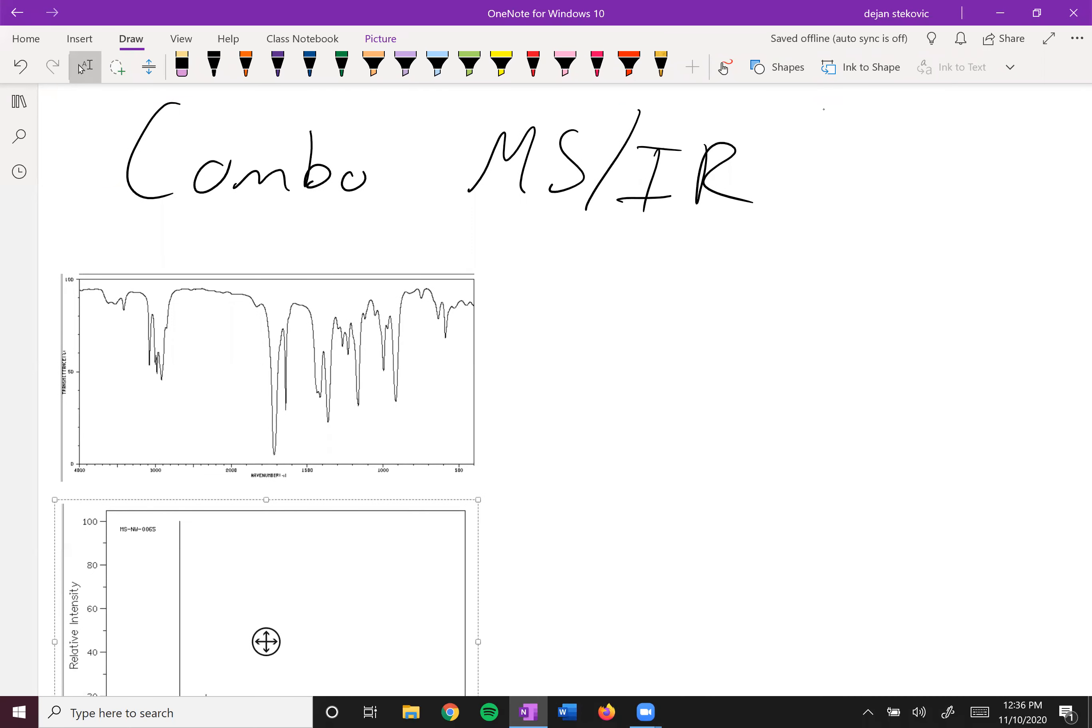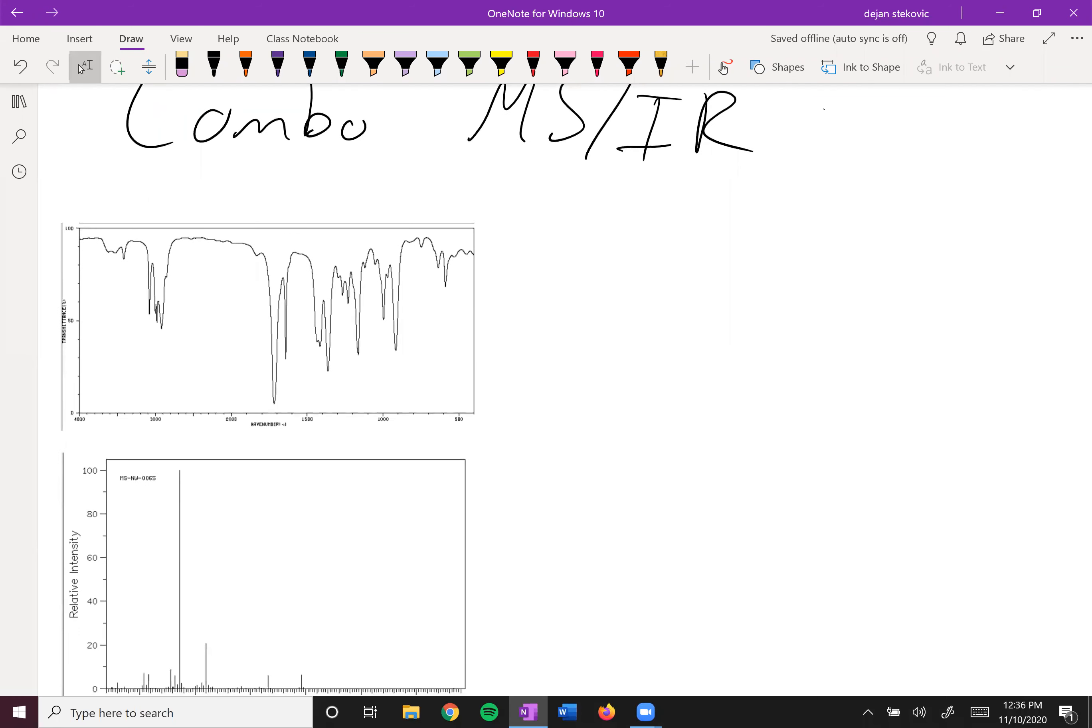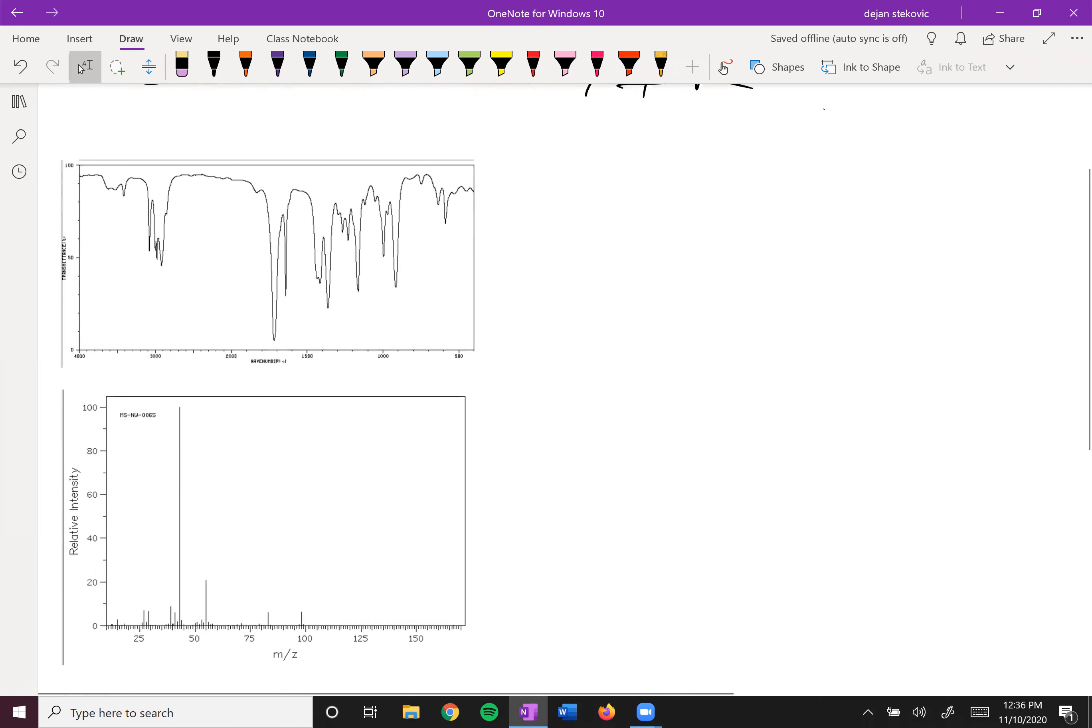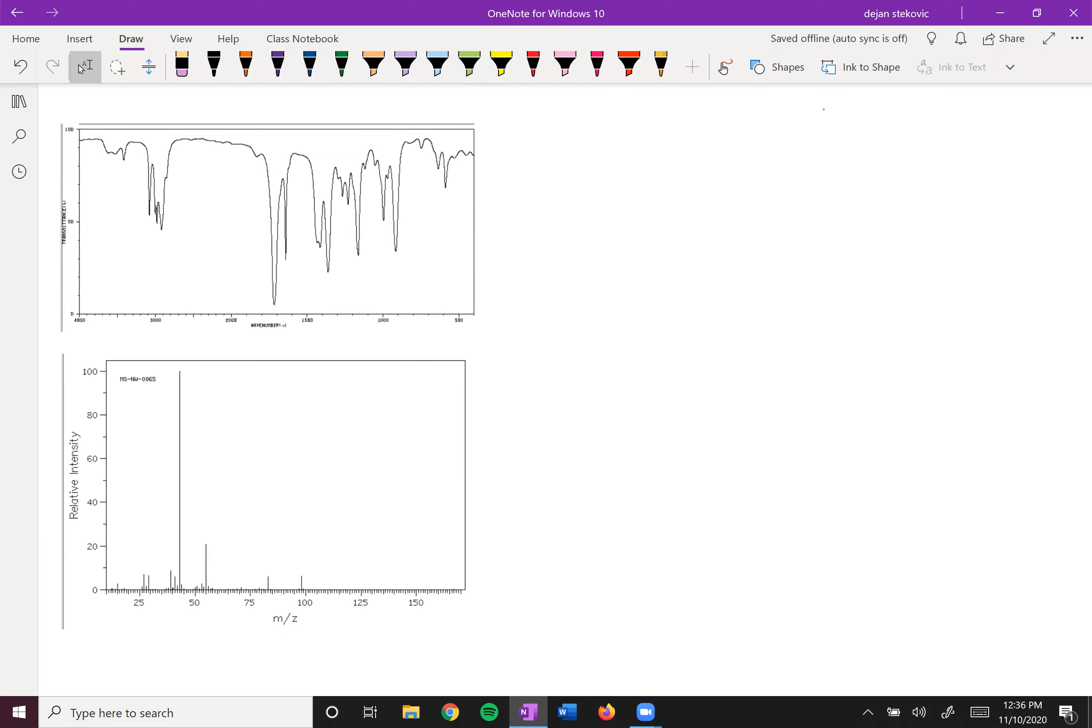All right, so remember our actual goal here is to identify the formula and structure of our compounds. A good place to start with this is to take a look at your mass spec and infrared spectrum and pull out information to limit the possibilities of what molecule it could be. Let's go ahead and take a look at this. These are from the same compound and let's see what data we can pull out.